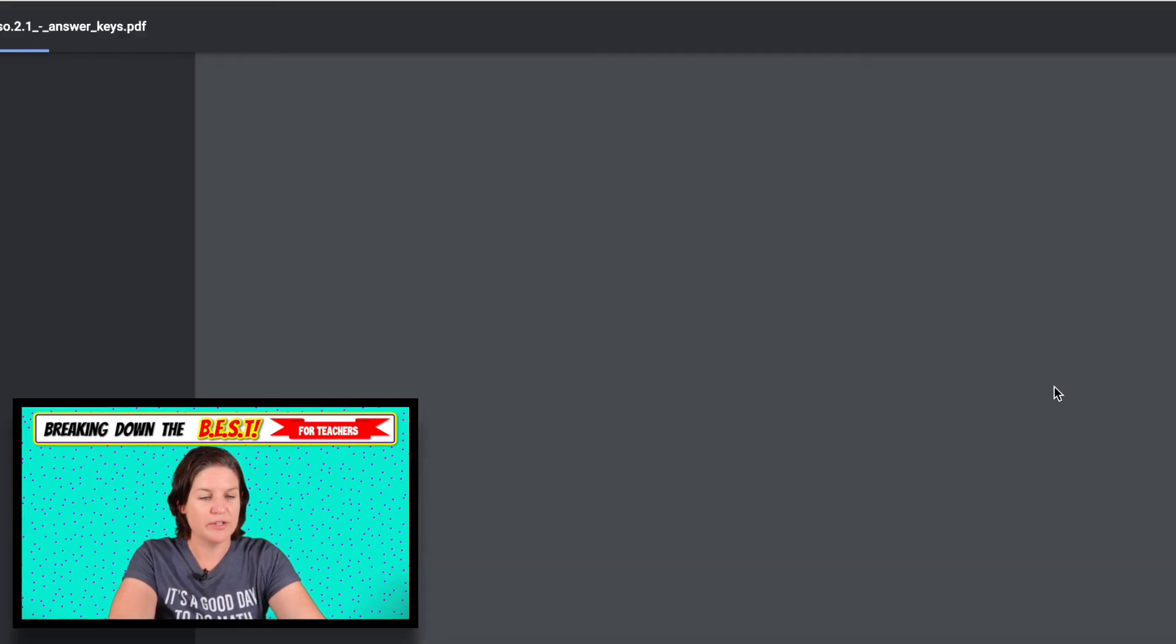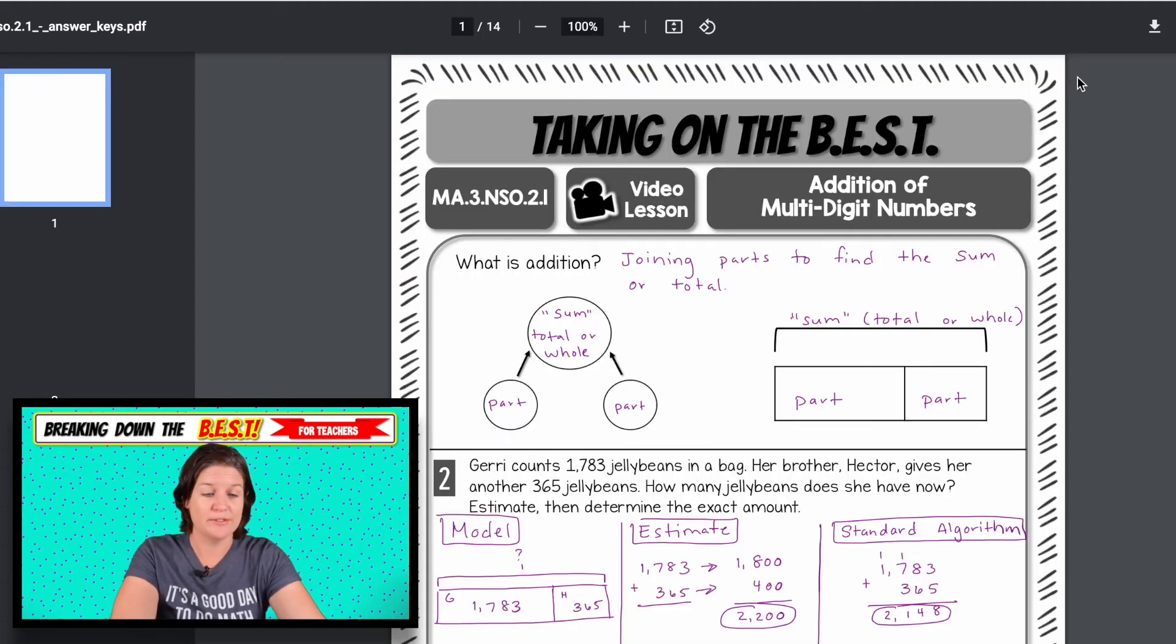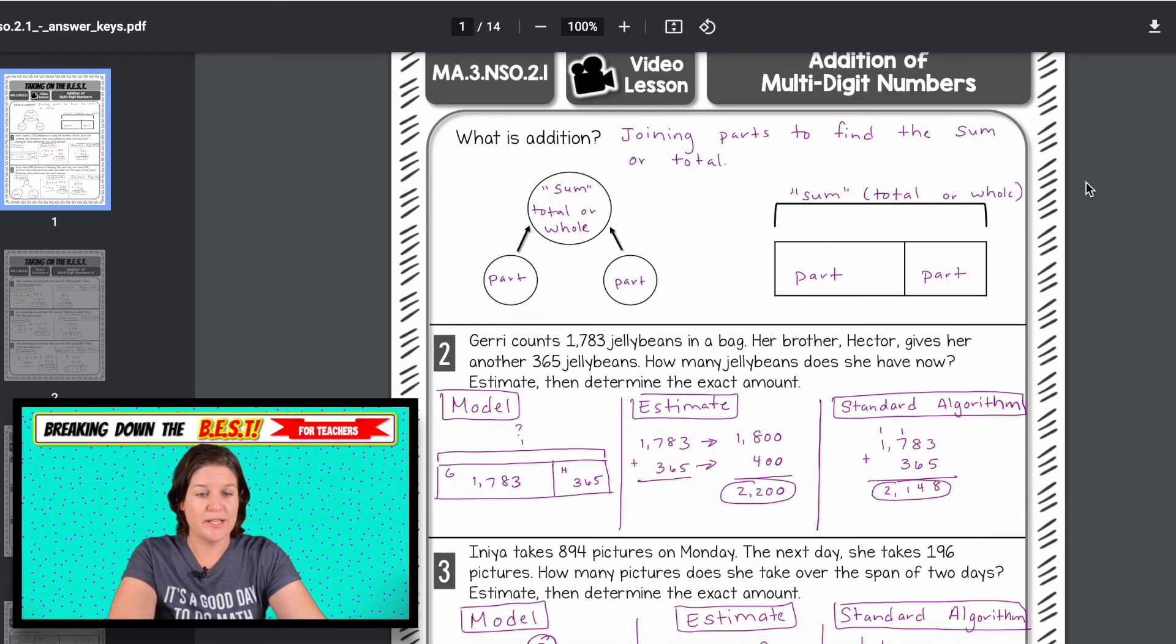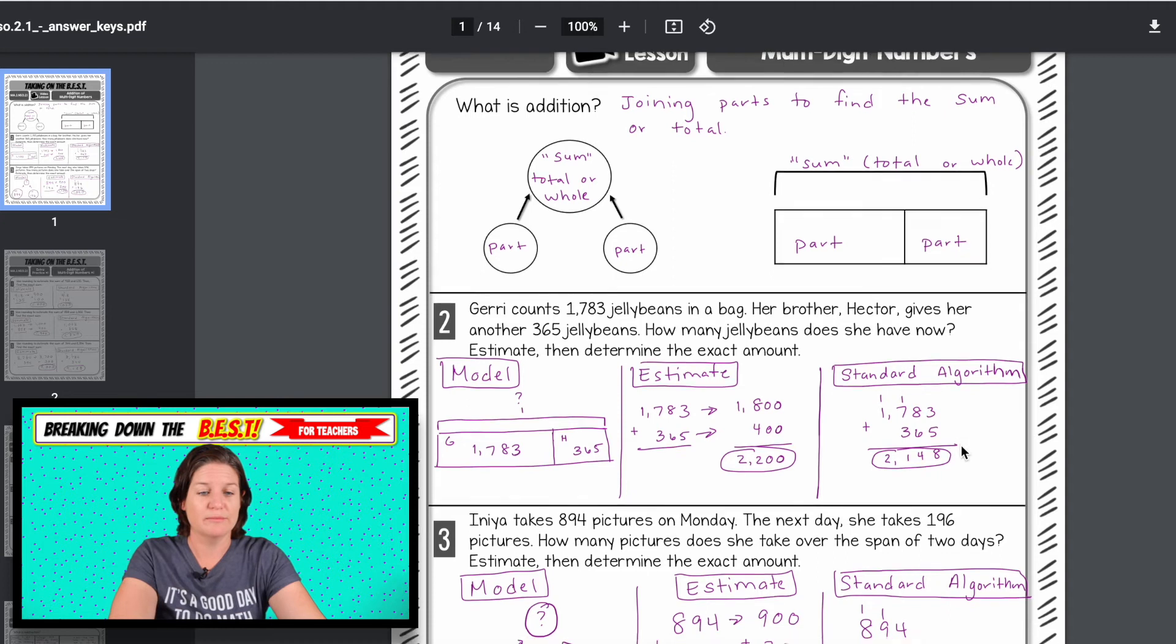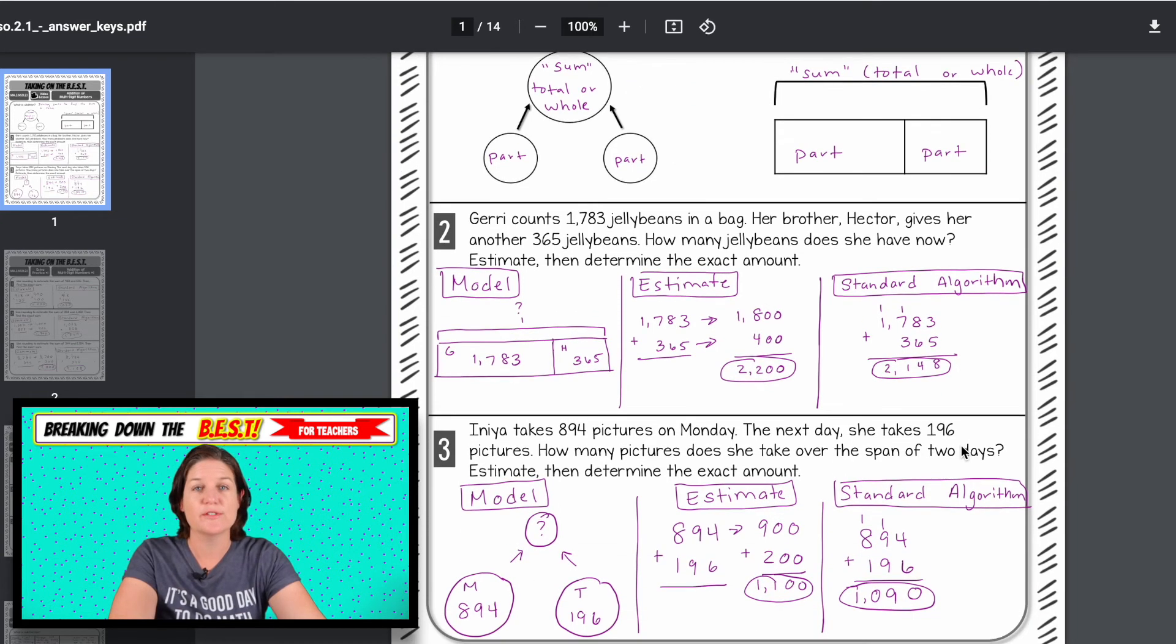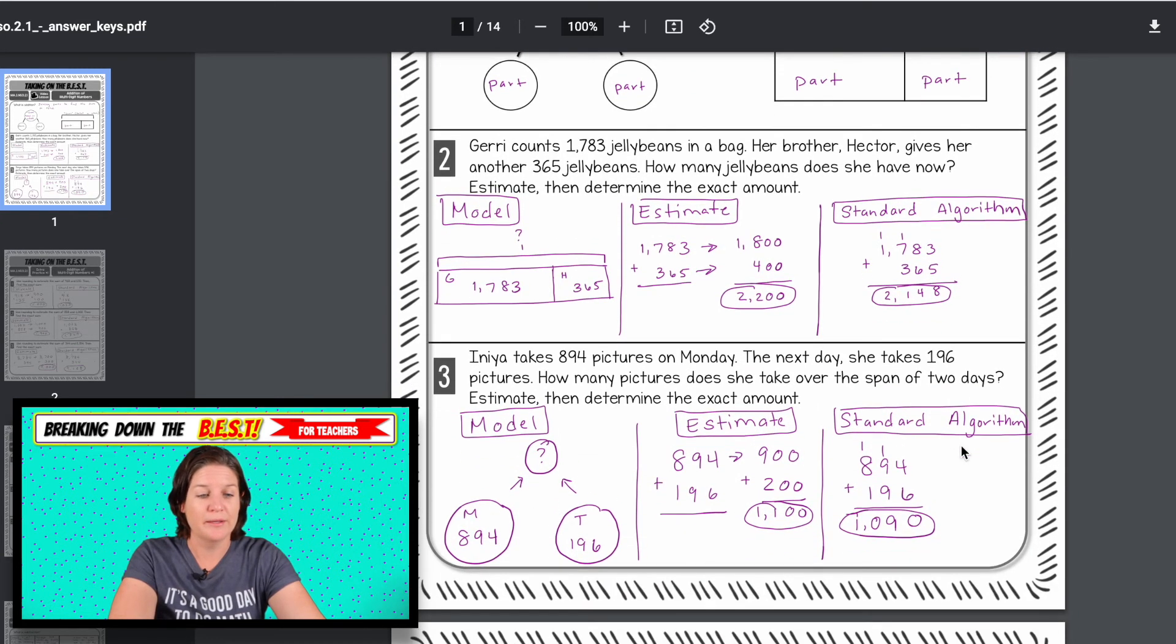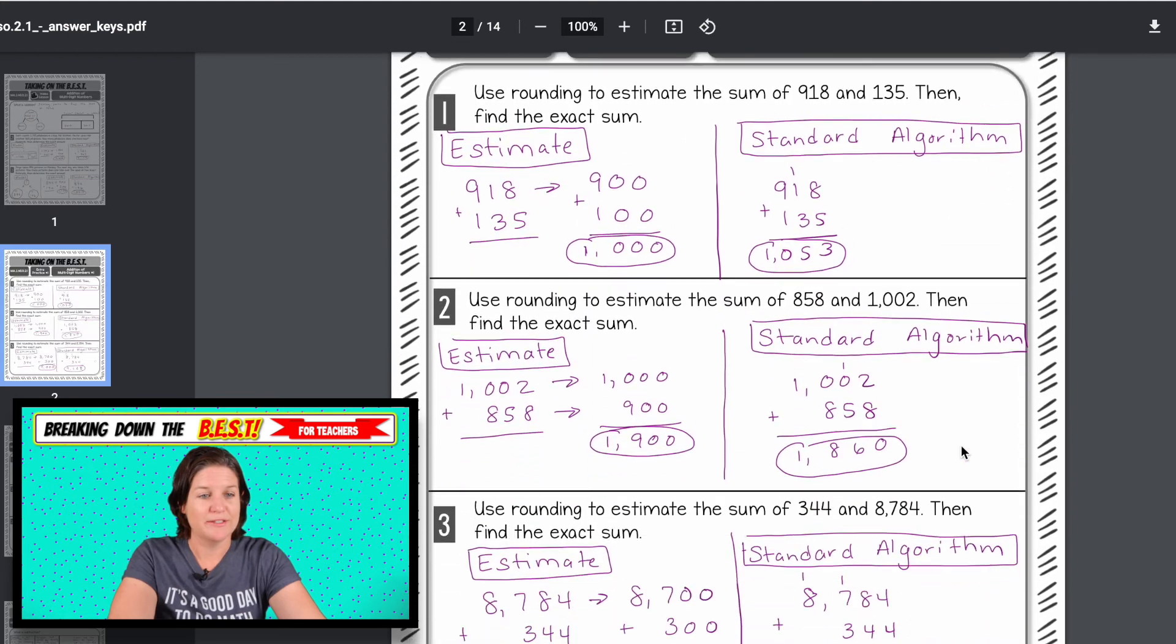All right. So those are your printables for your silver. I'll show you an example of the answer key, just so you can see that you have, it might look like there's a lot of empty space and there's not a whole lot of work to be done. But in these video lessons, there are a lot of expectations for these students. So look at all this work. We're taking notes, we're modeling, we're estimating, we're finding the exact sum or difference using a standard algorithm. Definitely take a look at that.